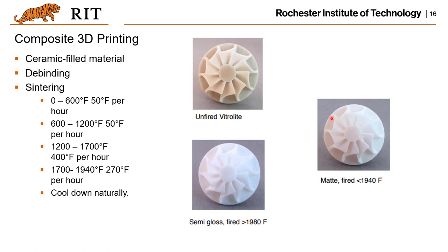A new application of the stereolithography-based method is printing composite materials, specifically ceramic-filled materials. People combine ceramic material with polymers where the polymer serves as a binder. The part is printed using the normal photopolymerization-based 3D printing method, after which a debinding step burns out the polymer, and then a sintering process further solidifies the printed ceramic shape.